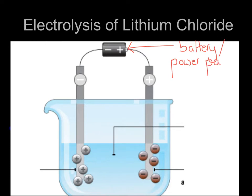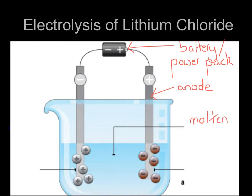Attached to the positive side of that power supply, we have the positive electrode. If you think back to the word PANIC, P-A in PANIC stands for positive anode. Now the two electrodes are dipping into this liquid, and this liquid is the electrolyte. Because we're using the example of lithium chloride today, we have got some molten lithium chloride. Remember, it's got to be molten to free those ions up to move.